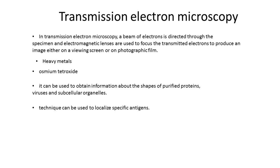The transmission electron microscope has sufficiently high resolution that it can be used to obtain information about the shapes of purified proteins, viruses, and subcellular organelles. Antibodies can also be tagged with electron-dense gold particles, in a similar way to being tagged with a fluorescent compound in immunofluorescence microscopy, and then bound to specific target proteins in the thin sections of the specimen.